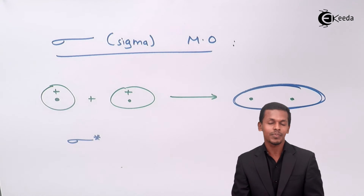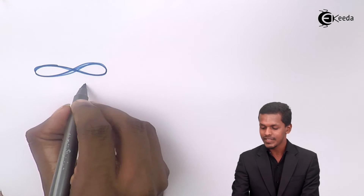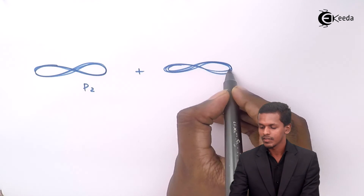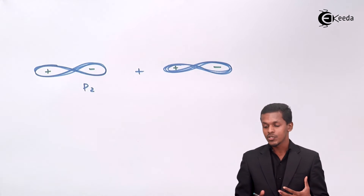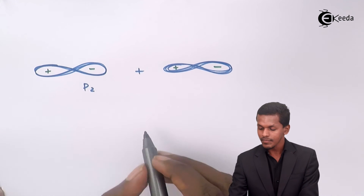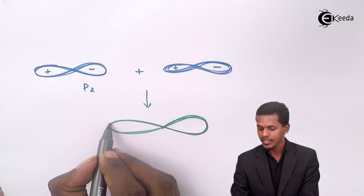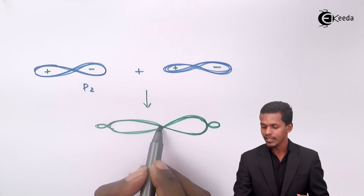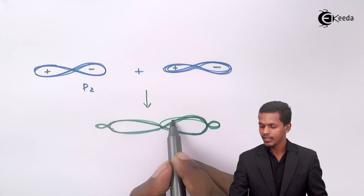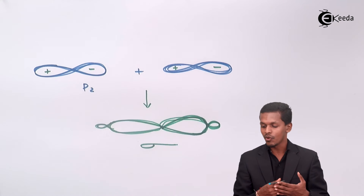Even though it involves p orbitals — suppose the pz is combining with another pz. These are the two lobes, and suppose I mention the signs: plus and minus on each. If they are combining coaxially, the combination leads to maximum overlapping, and that is the reason this kind of molecular orbital formed is also known as sigma.